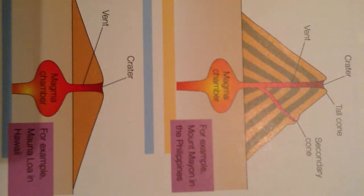This is the video for composite and shield volcanoes. First there is the composite volcano which is formed at a destructive plate margin. When the oceanic plate sinks into the mantle and melts it forms magma.